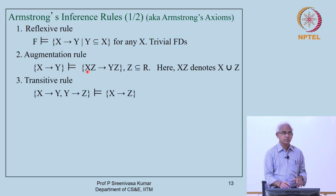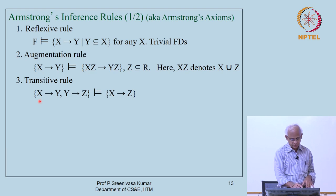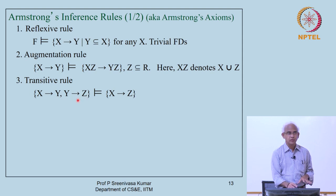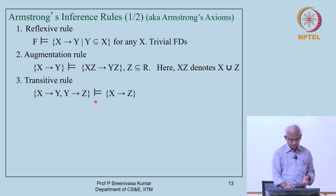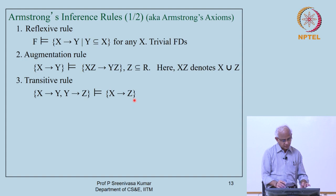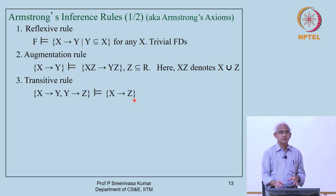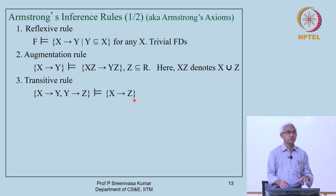The third rule is the transitive rule. If X determines Y holds and Y determines Z holds together on some scheme, we can argue they logically imply X determines Z also holds. The appropriate name is the transitive rule. In addition to these three, there are three more rules which are not essential but nice to have.